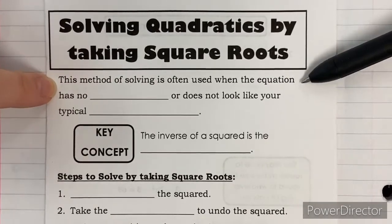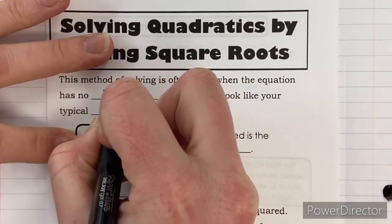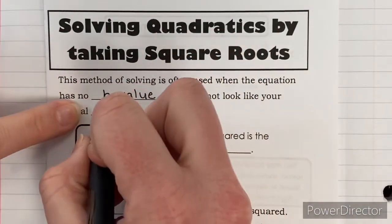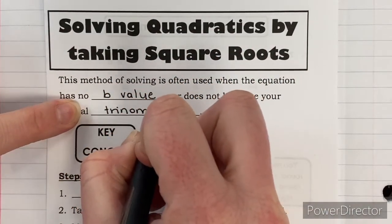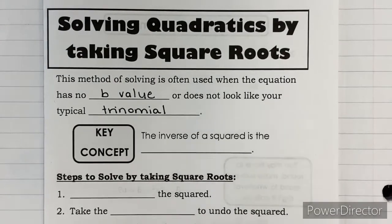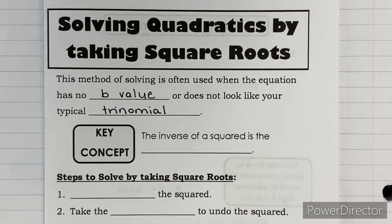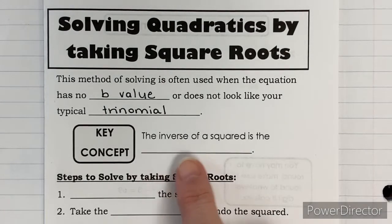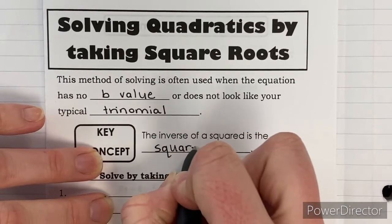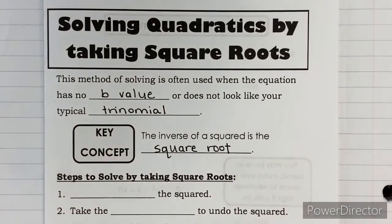This method of solving is often used when the equation has no b value, or does not look like your typical trinomial. Trinomials are just expressions that have three terms — that's what 'tri' means. The big key concept for this method is knowing what the inverse of a squared is. The inverse of a squared is the square root — those two things are opposites, so they undo each other, just like add and subtract, or multiply and divide.